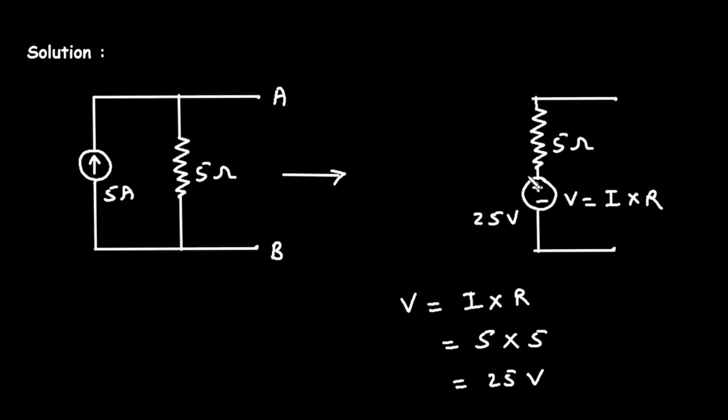We can also do the vice versa of this, we can convert this voltage source into its equivalent current source. Now here, this voltage source will be in series. But for current source, the current source will be in parallel with the resistor. So this is how we can perform source transformation.